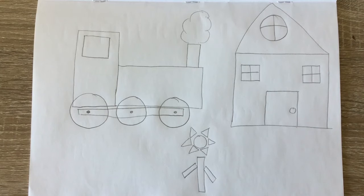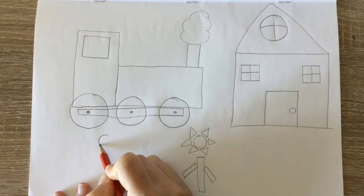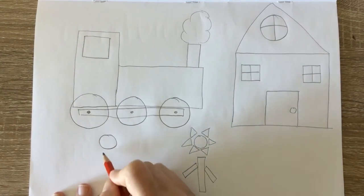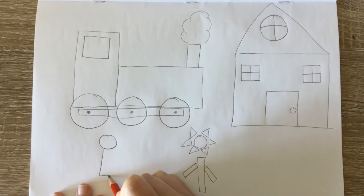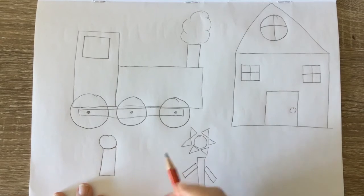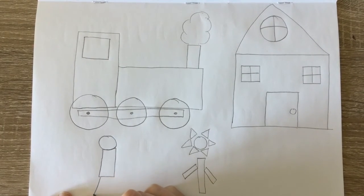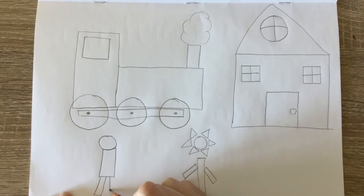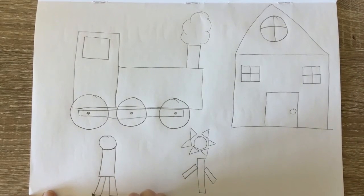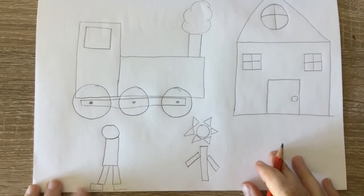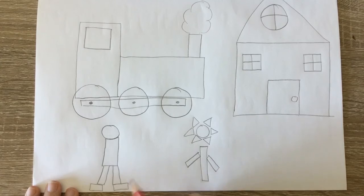And maybe what we could do is you could draw some more. You could also draw people with some shapes as well. You could draw a circle for their head. A rectangle for their body. You could draw another rectangle for their legs. Rectangles for the feet.